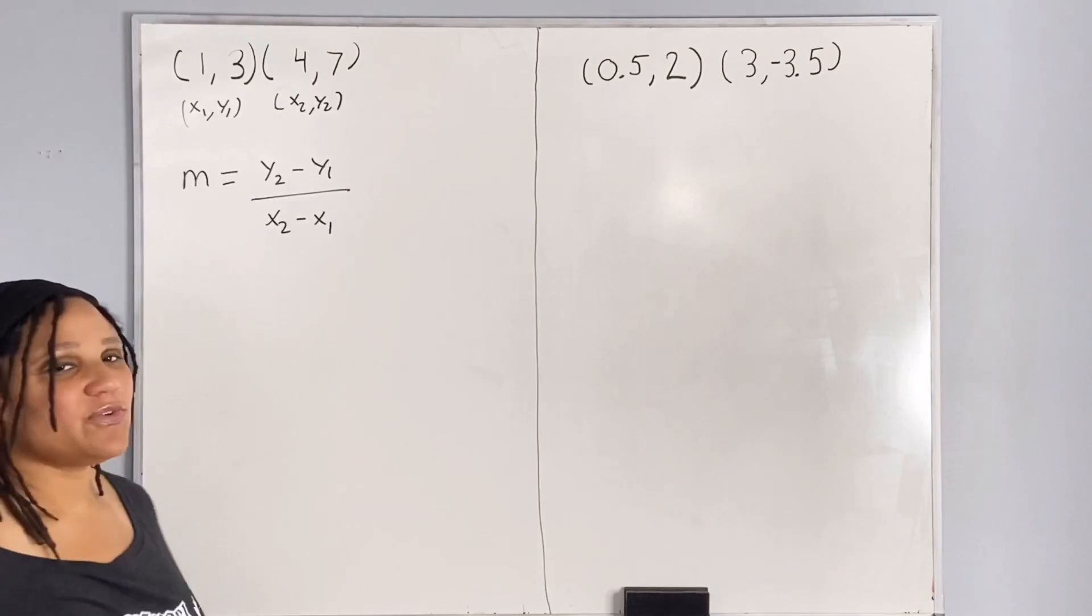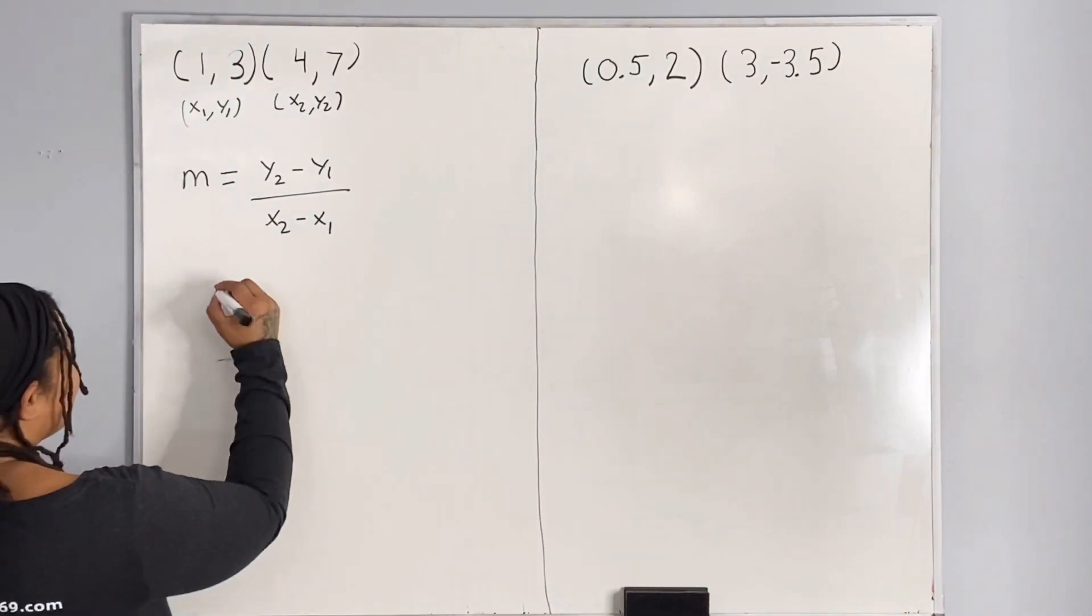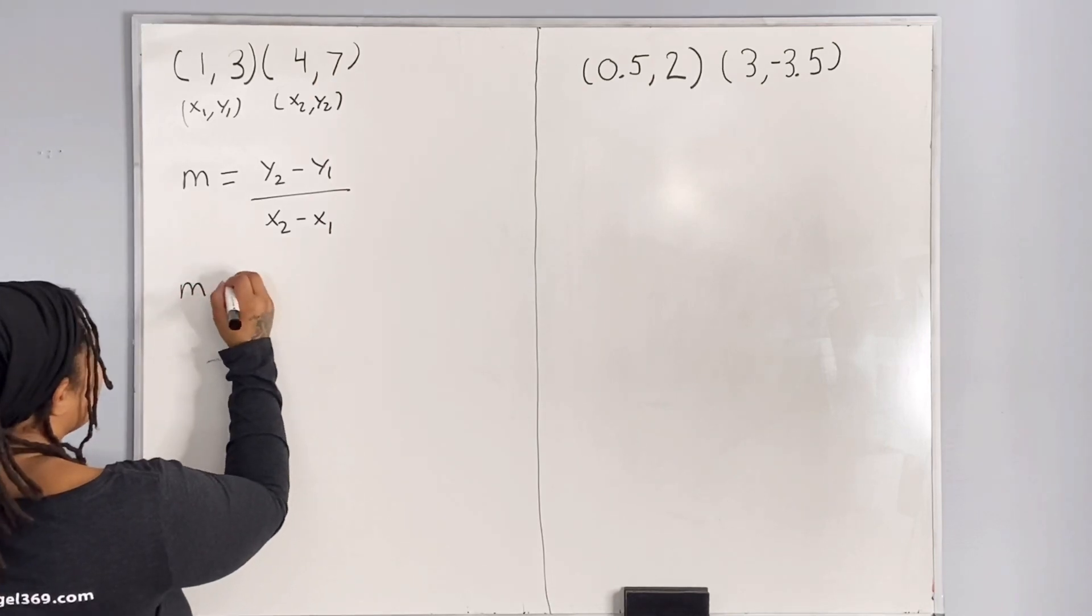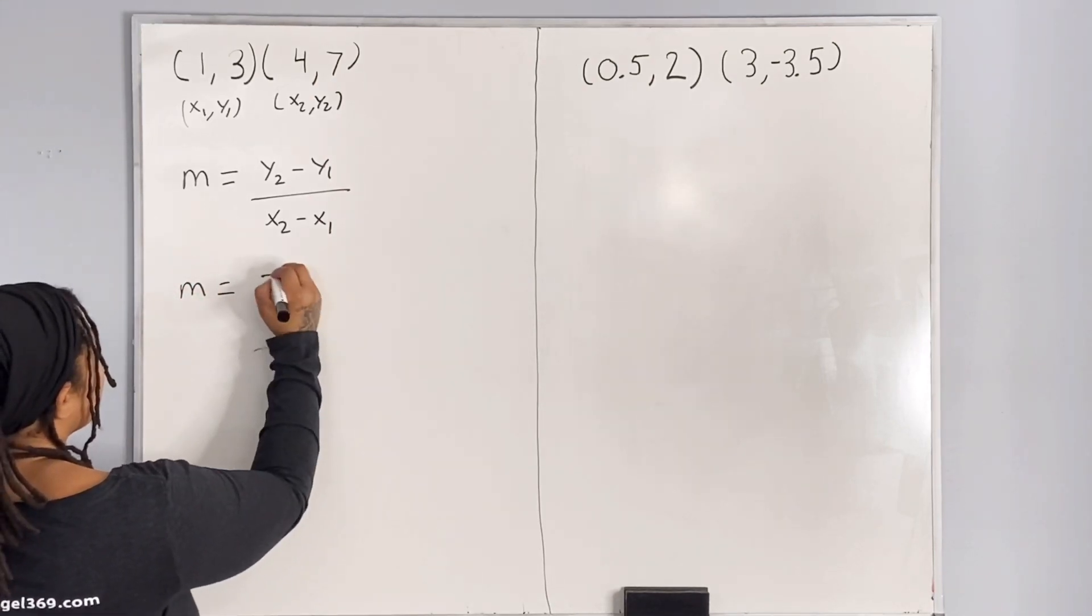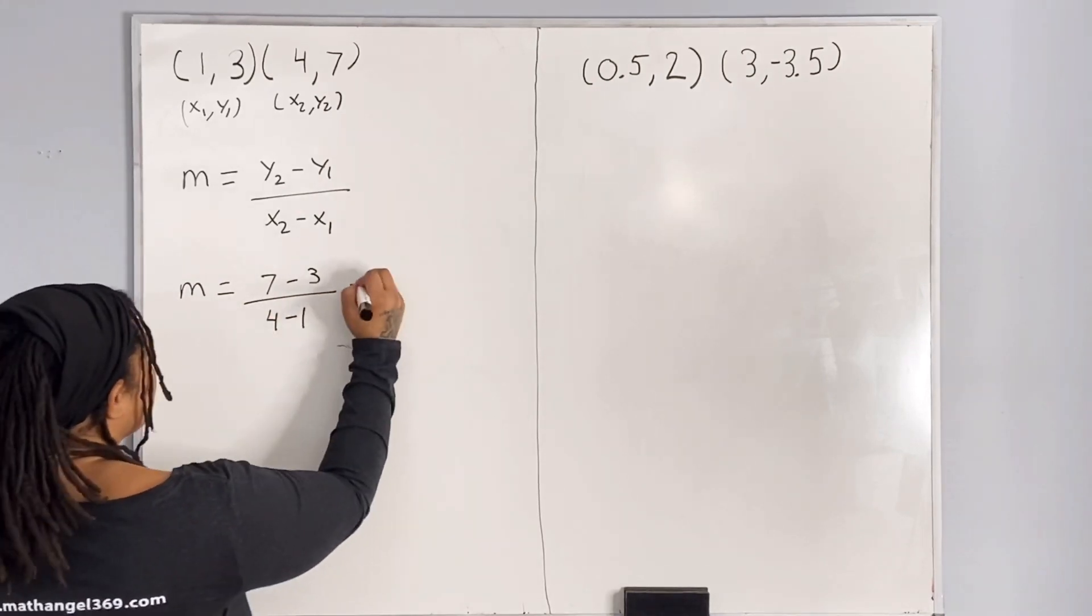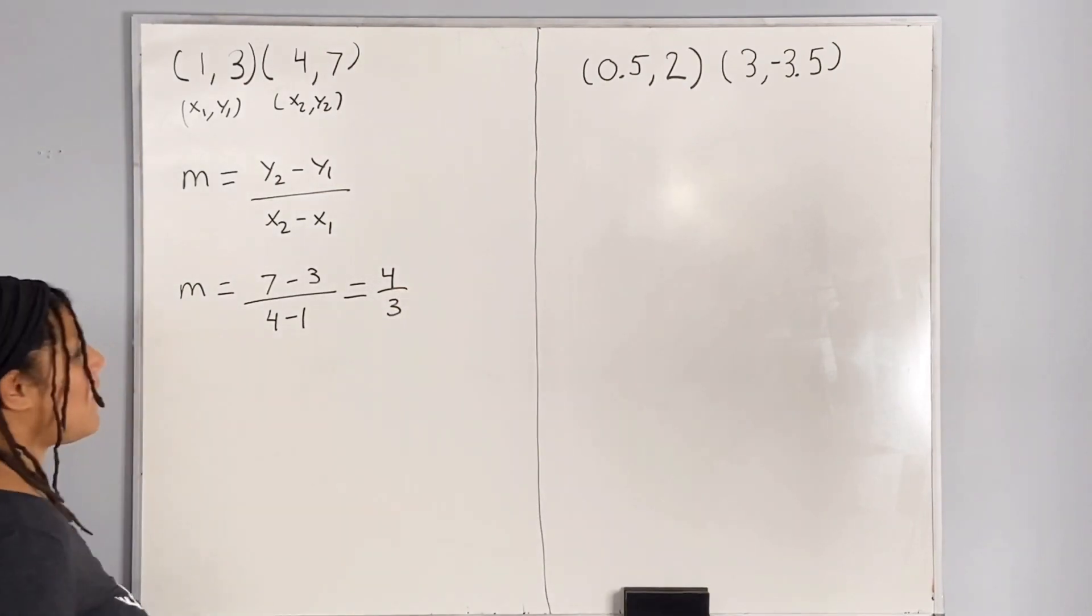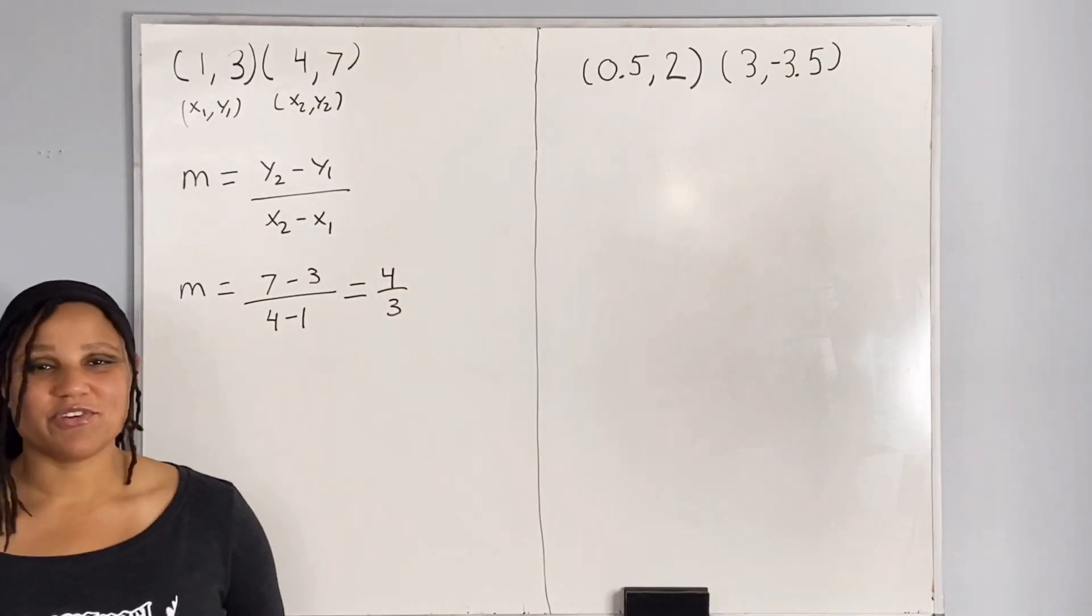And all we do is plug into the formula and solve. So we get m equals 7 minus 3 over 4 minus 1, which is equal to 4 over 3. So our slope is 4 over 3.